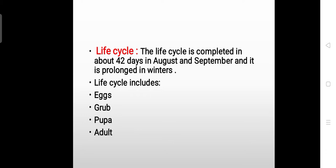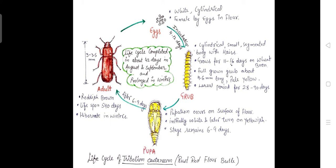Its life cycle includes egg, grub, pupa, and adult. Here is the representation of the life cycle. Starting from the egg, which is white and cylindrical in color and shape. One female can lay eggs in flour. After the incubation period, which is 4 to 12 days, the egg hatches.